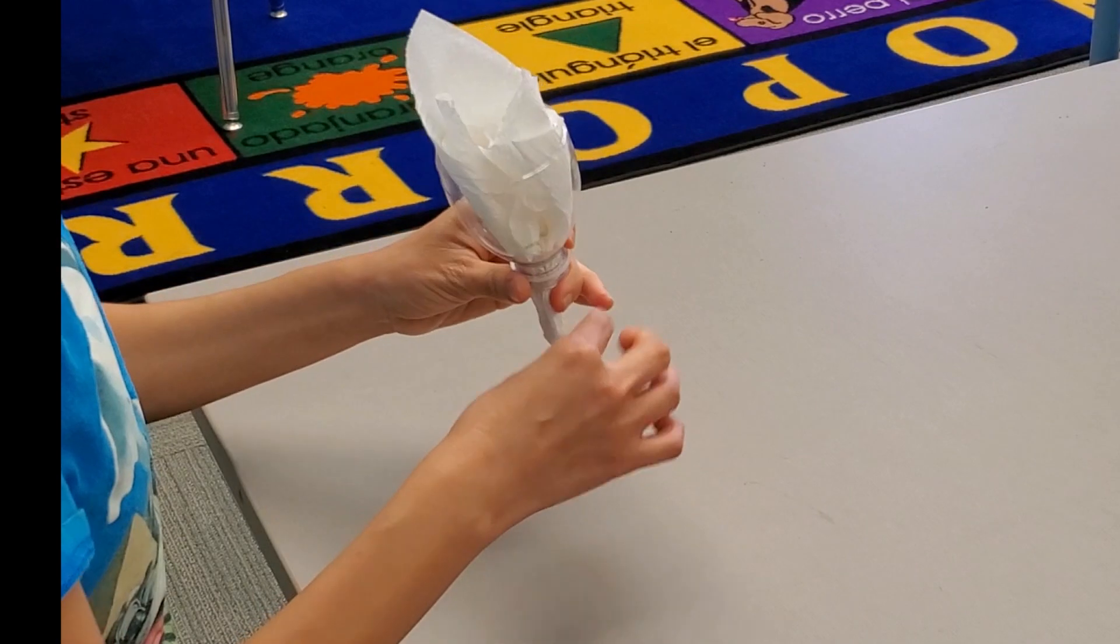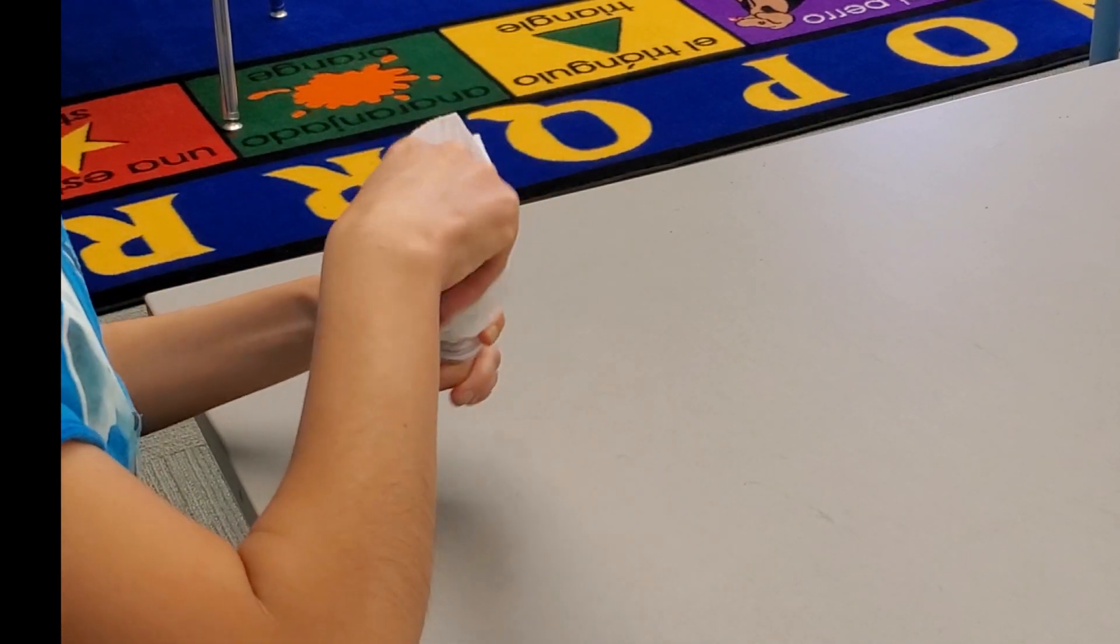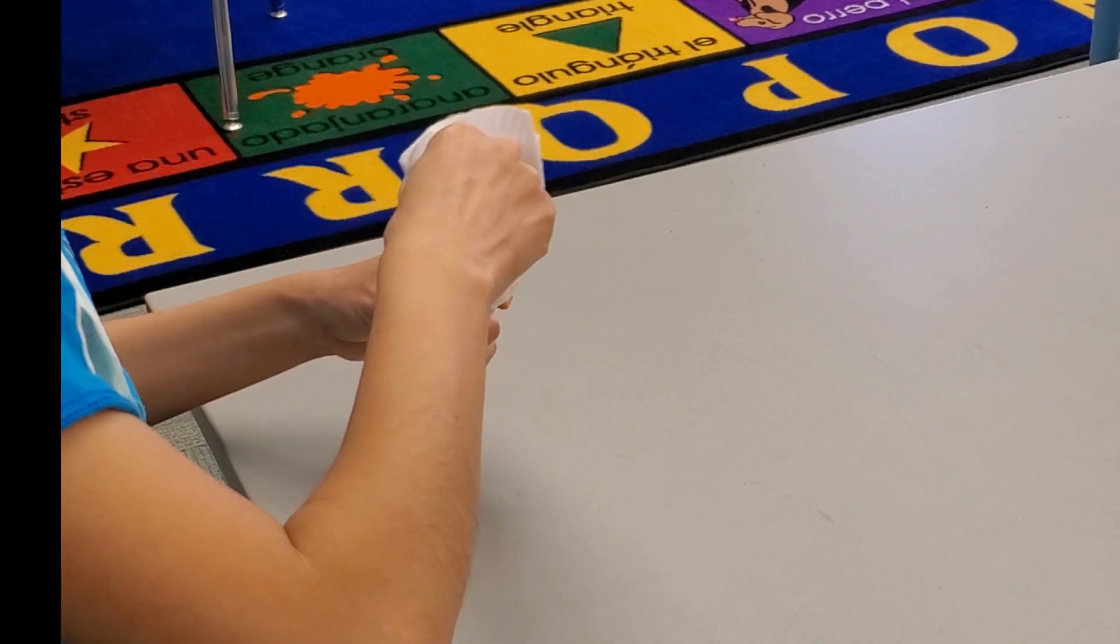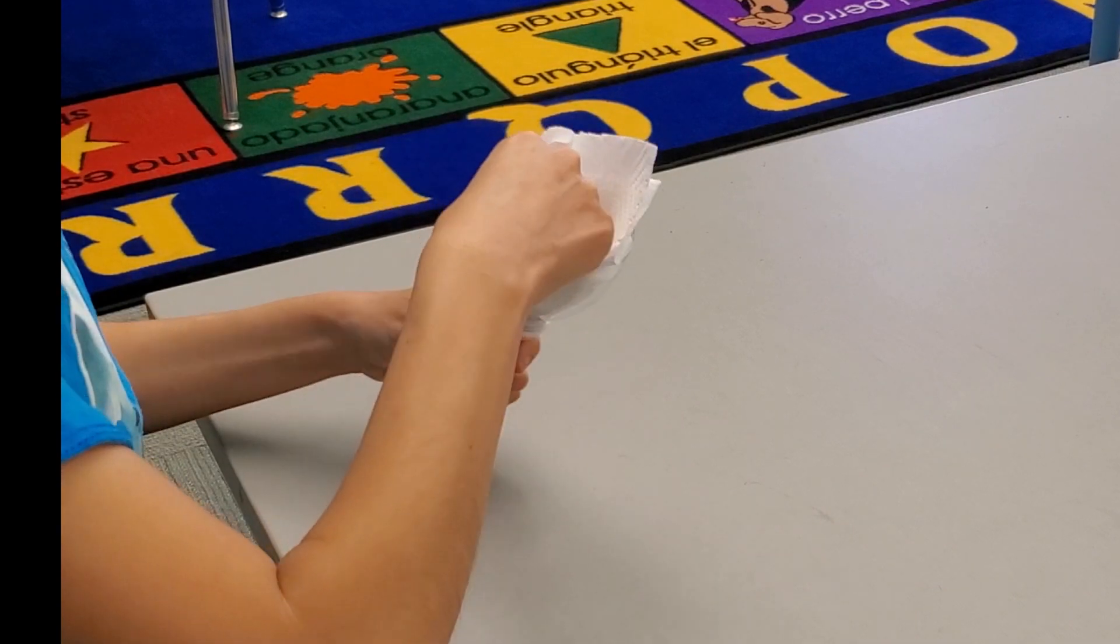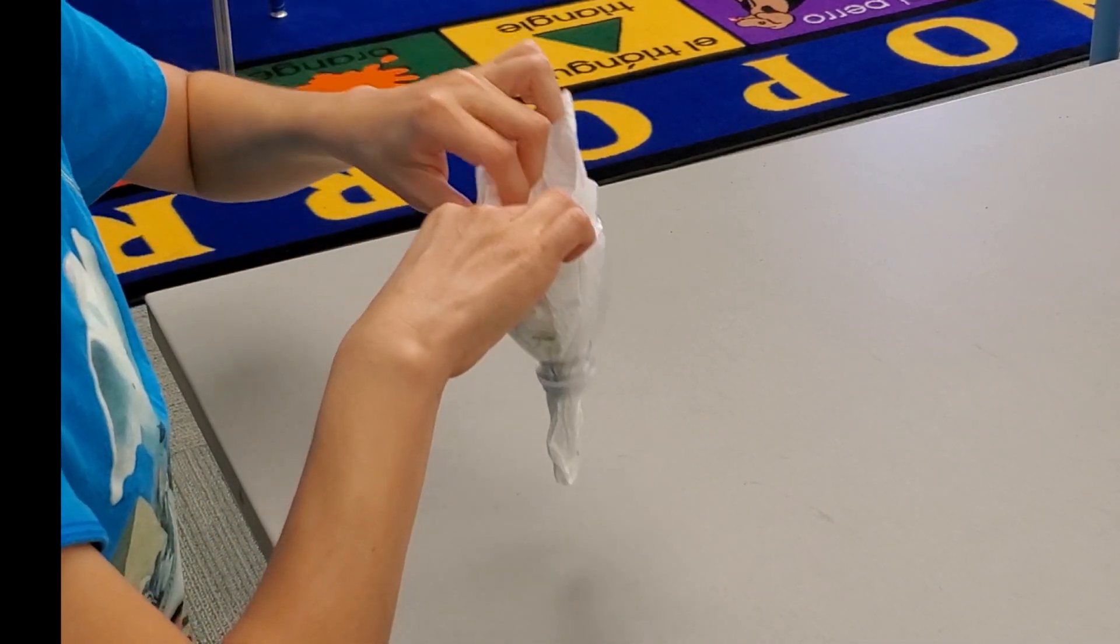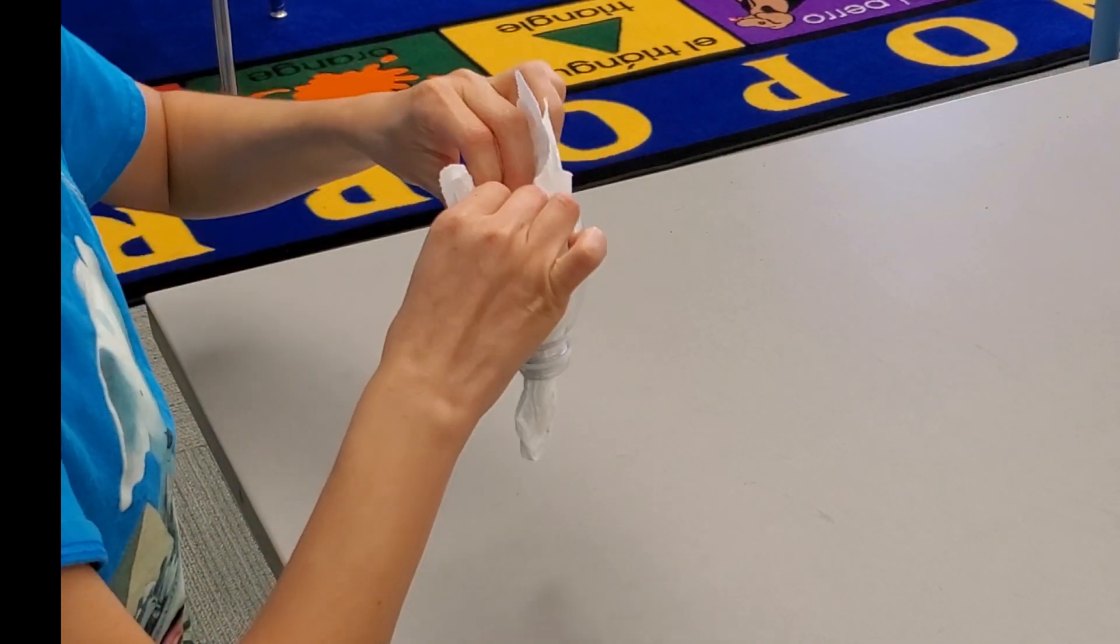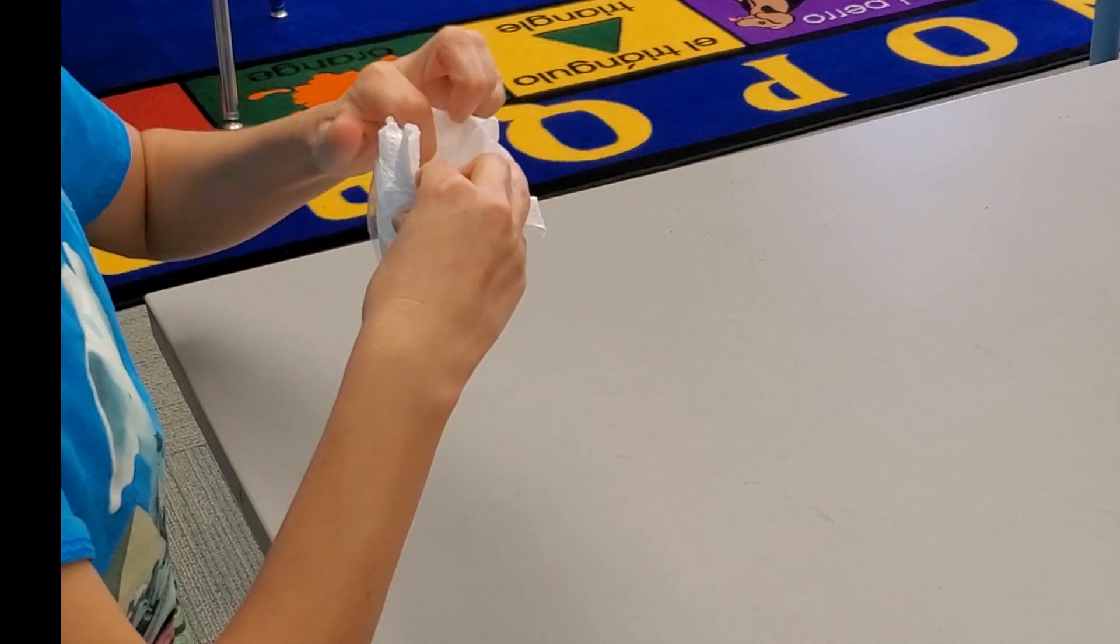Then create a pocket to hold the soil. The remaining part of the paper, you want to tuck it in the funnel.